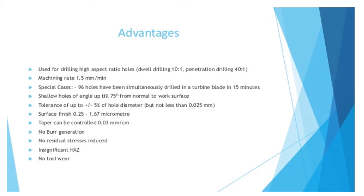Advantages: used for drilling high aspect ratio holes. Machining rate is 1.5 mm per minute. In a special case, 96 holes have been simultaneously drilled in a turbine blade in 15 minutes. Shallow holes at angles up to 75 degrees from normal to the work surface can be drilled, which is very difficult with other processes. Tolerance is up to plus or minus 5% of hole diameter. Surface finish is 0.25 to 1.67 mm. Taper can be controlled to 0.03 mm per centimeter.